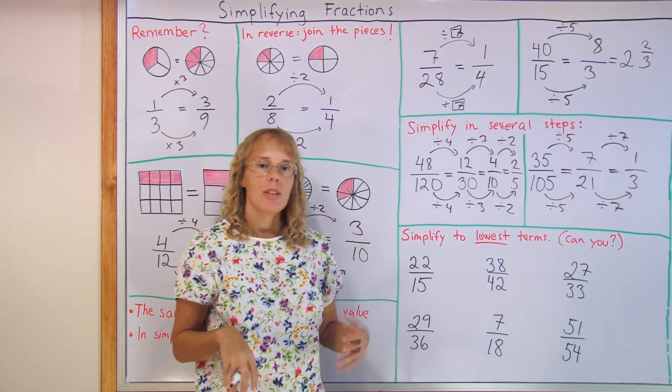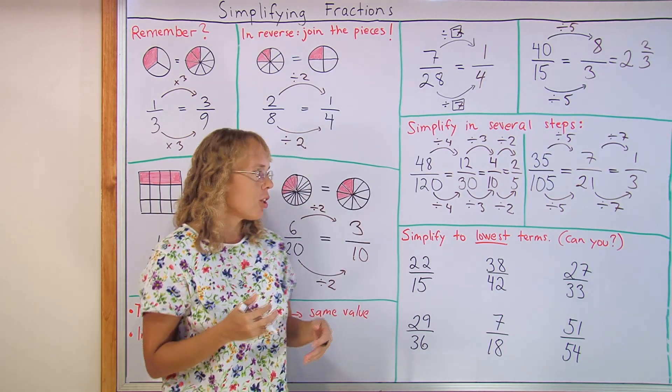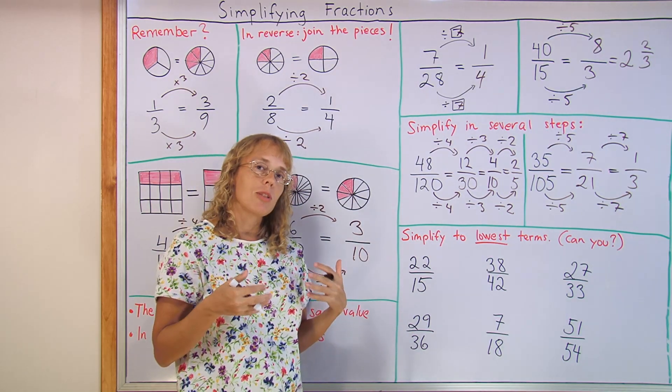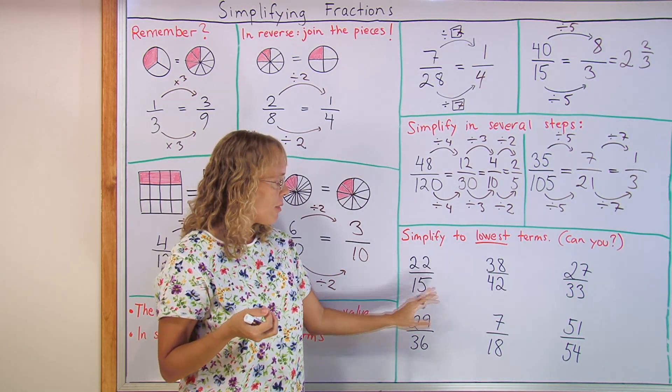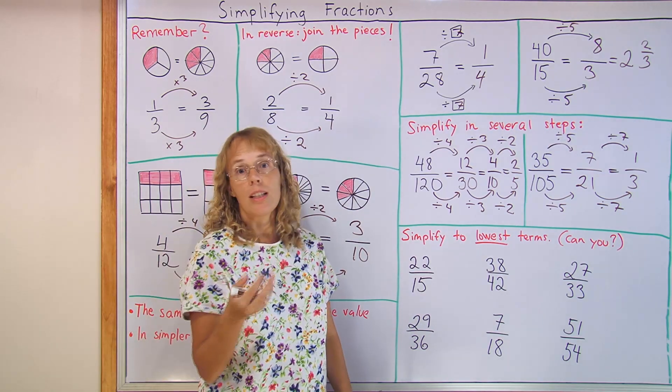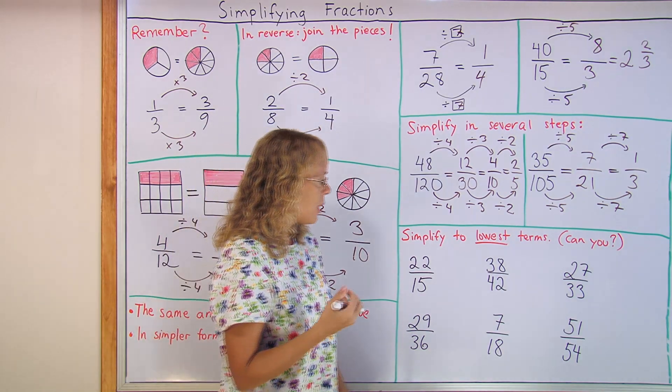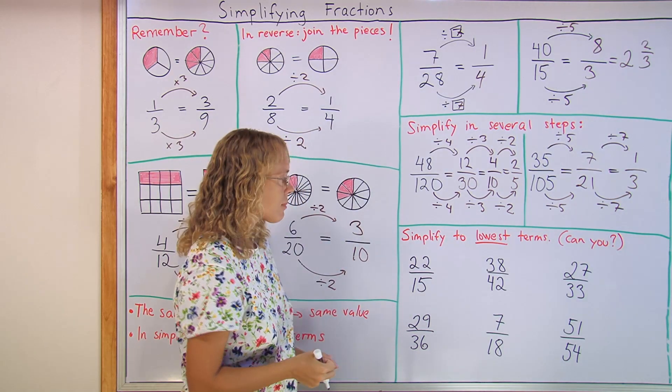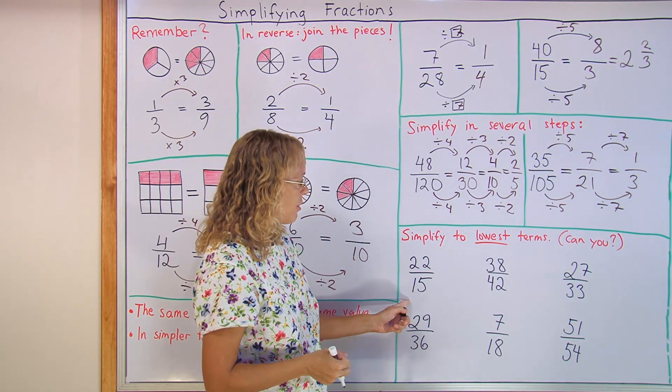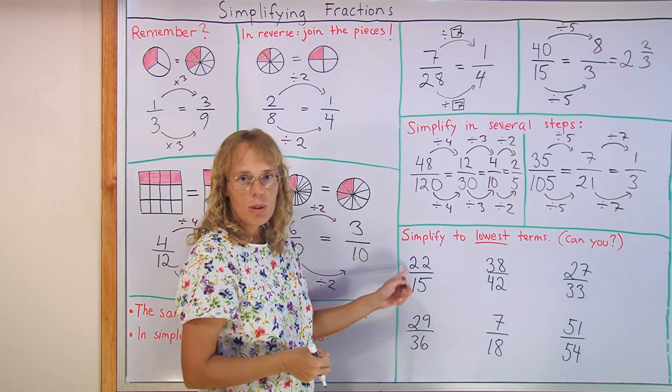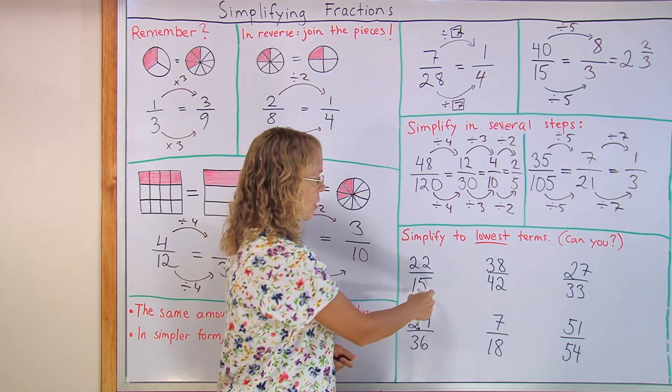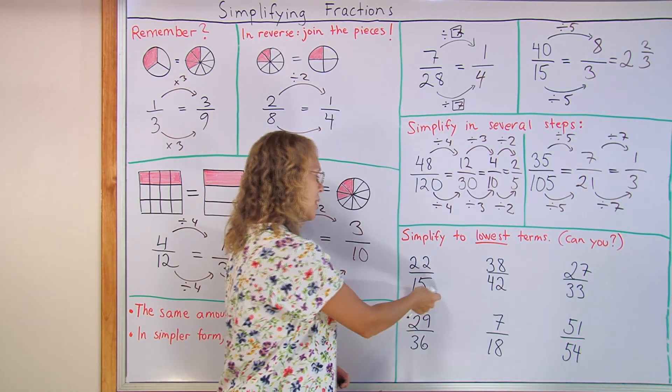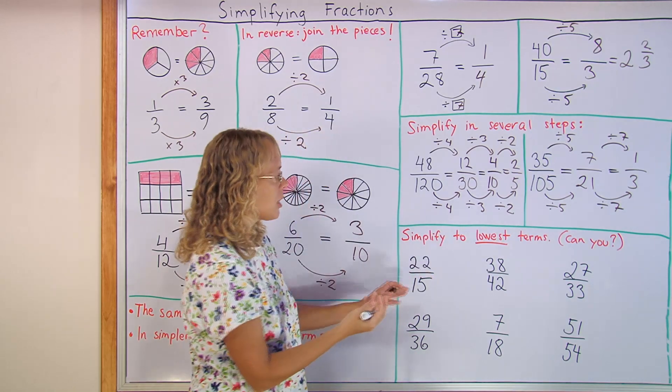Lastly, it's important to come to this notion of lowest terms and to notice that sometimes you cannot simplify. Some of these fractions cannot be simplified. They are already in their lowest terms, which means that the numerator and denominator cannot be any smaller numbers. For example, twenty-two and fifteen. They don't have any common factors. There are no numbers that you can divide both by. Twenty-two could be divided by two, but fifteen cannot. So this is already simplified to the lowest terms.